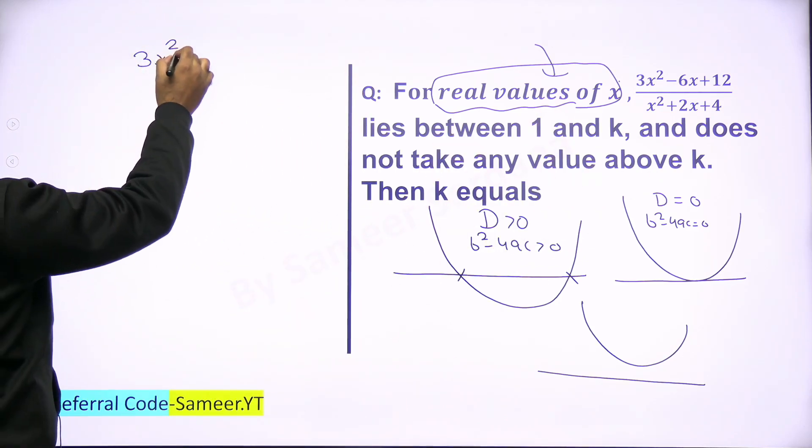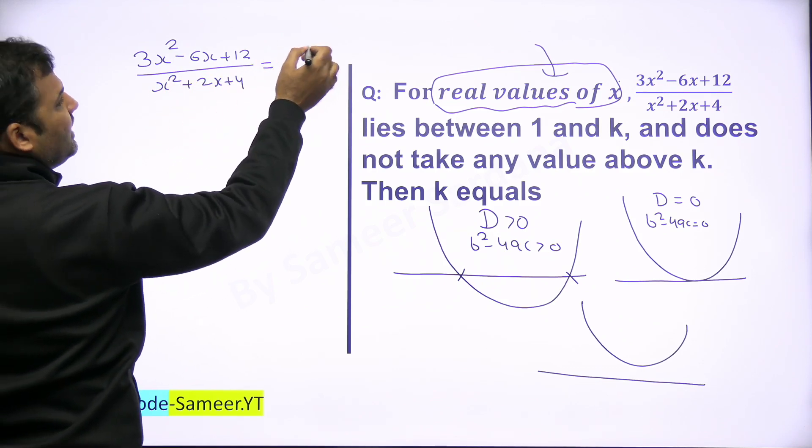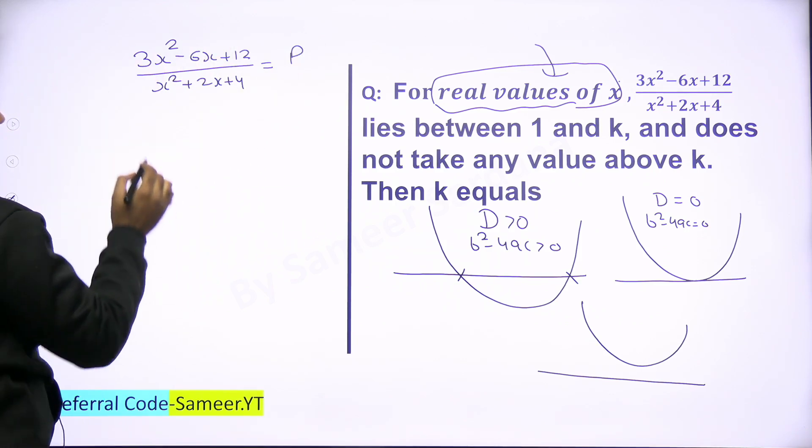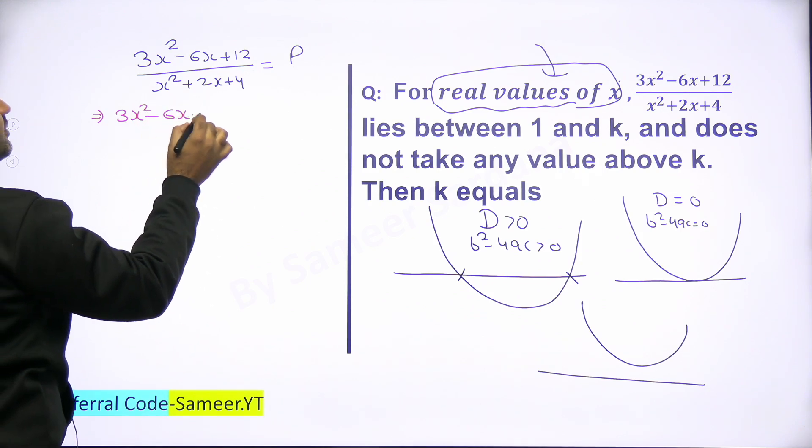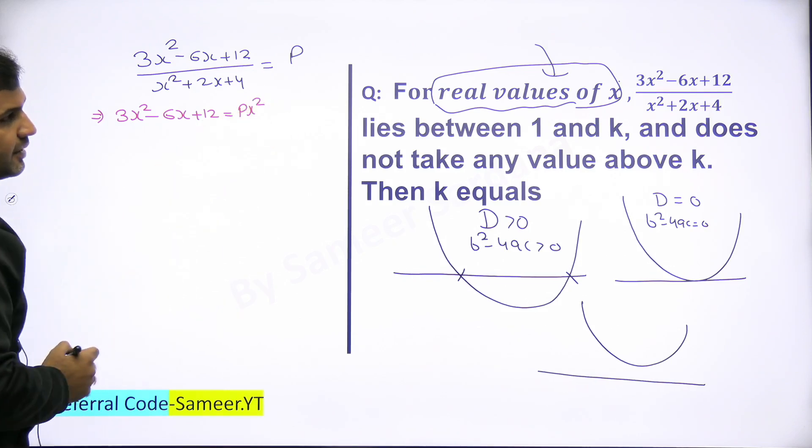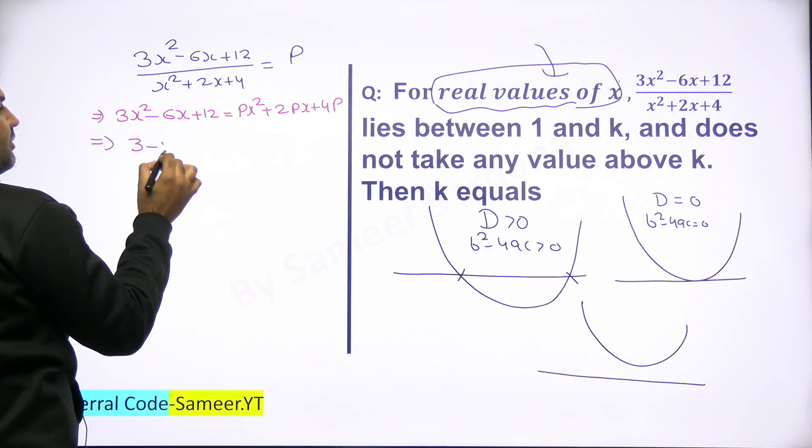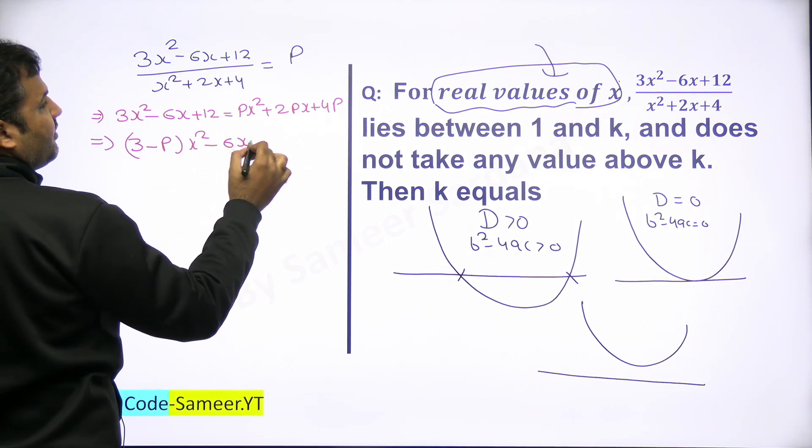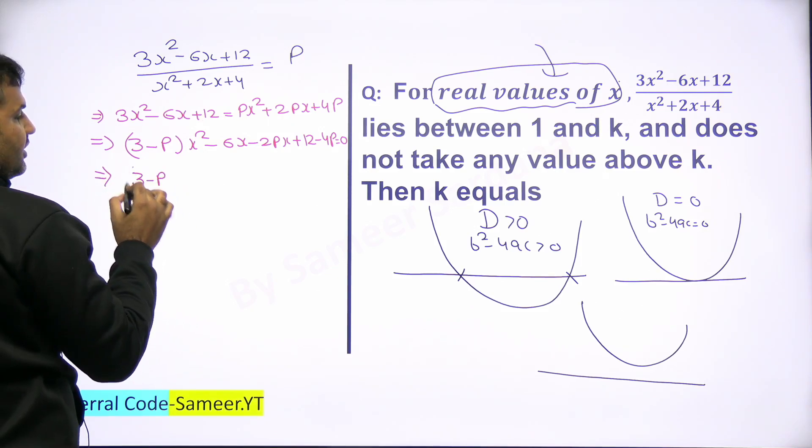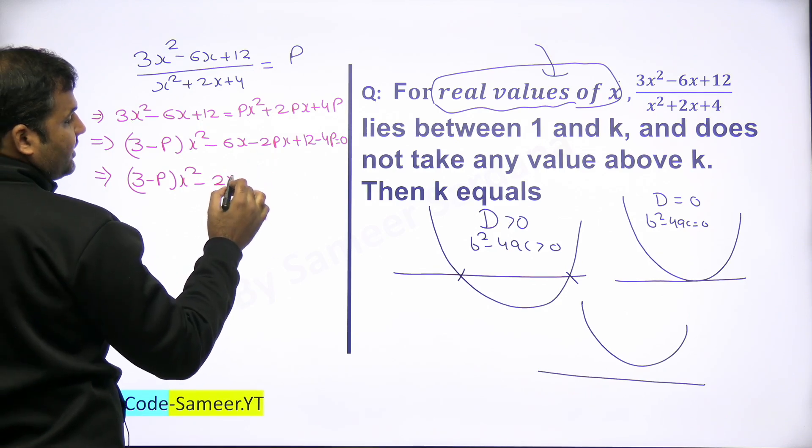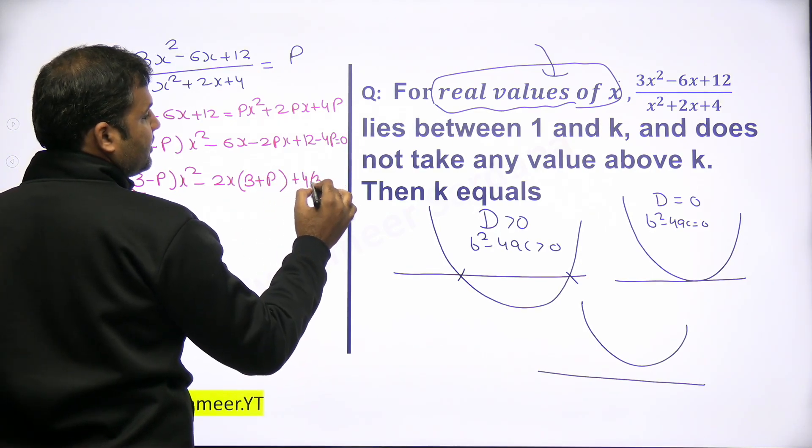So the first step to do is write down this whole expression as equal to k. (3x² - 6x + 12)/(x² + 2x + 4) equal to, let's assume that this is a value which is equal to p. Now what I am supposed to do is simply solve this equation now. Can I do the cross multiplication? This is 3x² - 6x + 12 is equal to p times (x² + 2px + 4p). Now take this on the left-hand side. This will be (3-p)x² - 6x - 2px + 12 - 4p = 0.